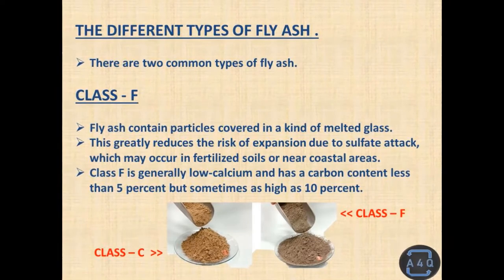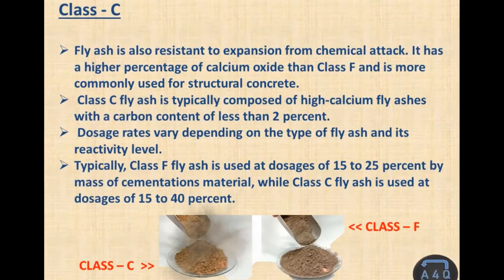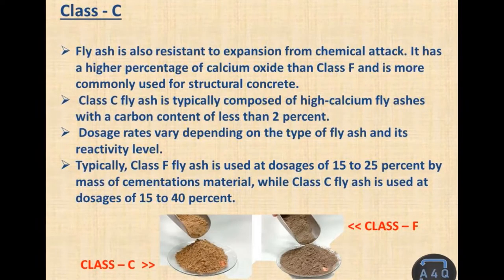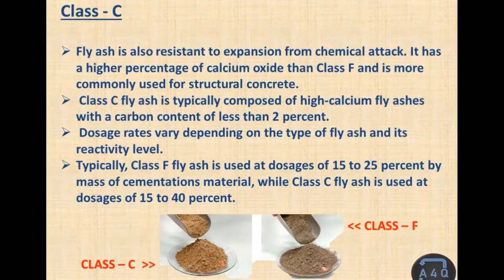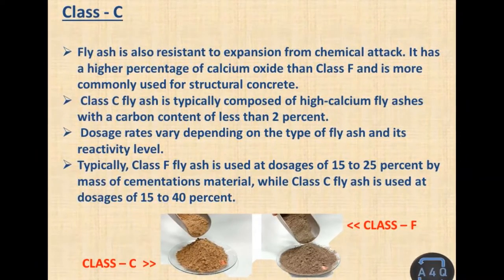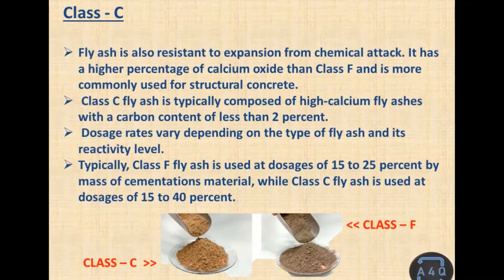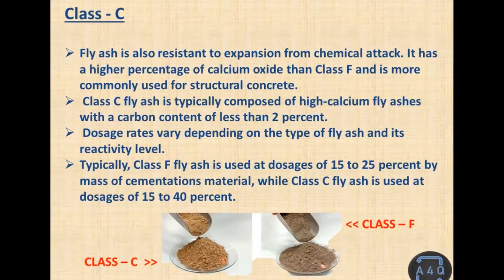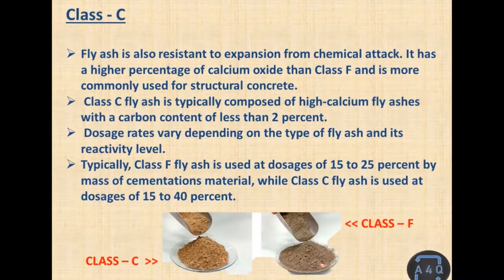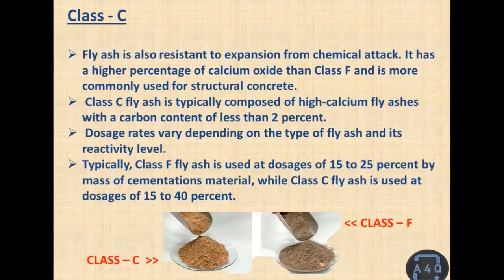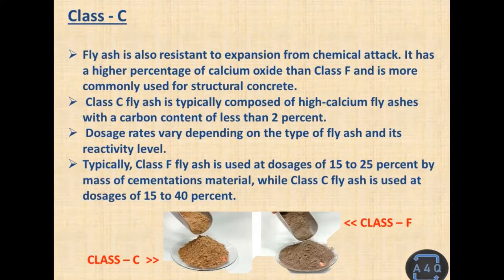Class F fly ash is generally low calcium, with a carbon content less than five percent, but sometimes as high as 10 percent. Class C fly ash is also resistant to expansion from chemical attack. It has a higher percentage of calcium oxide than Class F and is more commonly used for structural concrete. Class C fly ash is typically composed of high-calcium fly ashes with a carbon content of less than two percent.